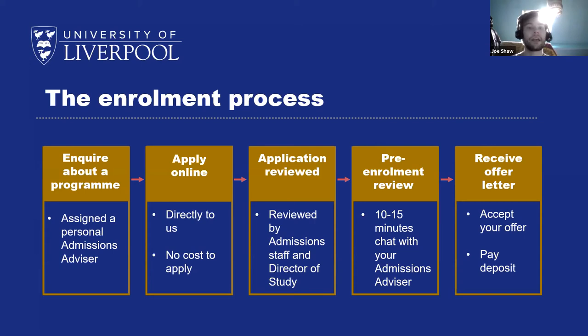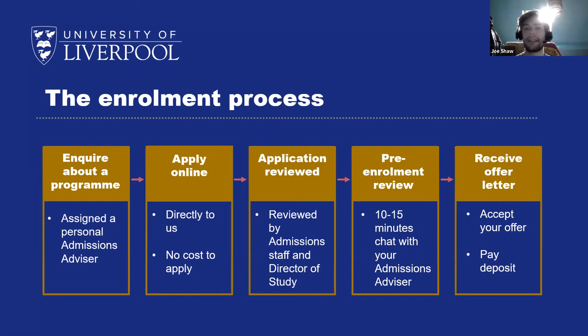The next step is having your application reviewed by an admissions manager for the online programs and the Director of Studies. We aim to get back to you within 10 working days. Once an application has been approved, we conduct a pre-enrolment review — a simple 10–15 minute telephone conversation where we talk through student commitments and the next steps for the enrolment process, making sure you've got everything you need. You'll then receive your official offer letter from the university, accept your place on the program, and pay your deposit, after which you'll be fully enrolled and ready to start.